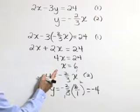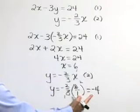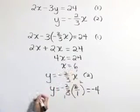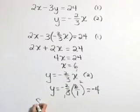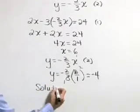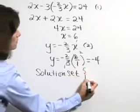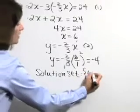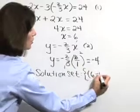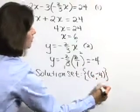To check, we would substitute these values into both equations and a check does verify that indeed the solution set includes the values x equals 6, y equals negative 4.